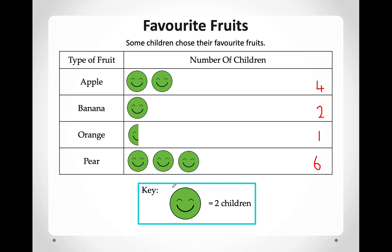Now we can also compare the information we collected. Which fruit is liked the most? Pears are most liked. And which fruit is least liked by children? Oranges, because only one child likes oranges.